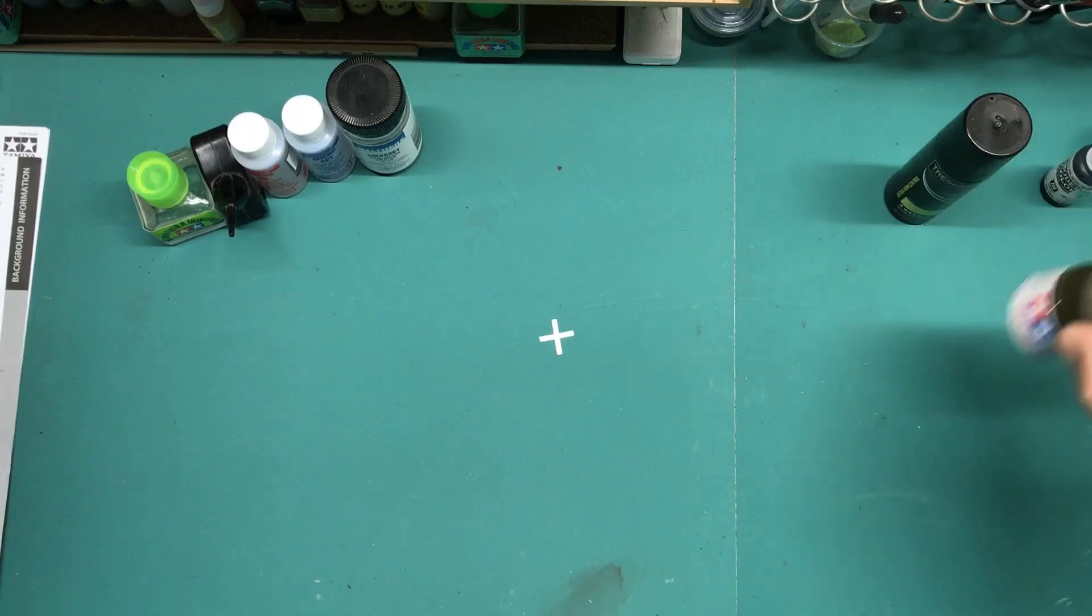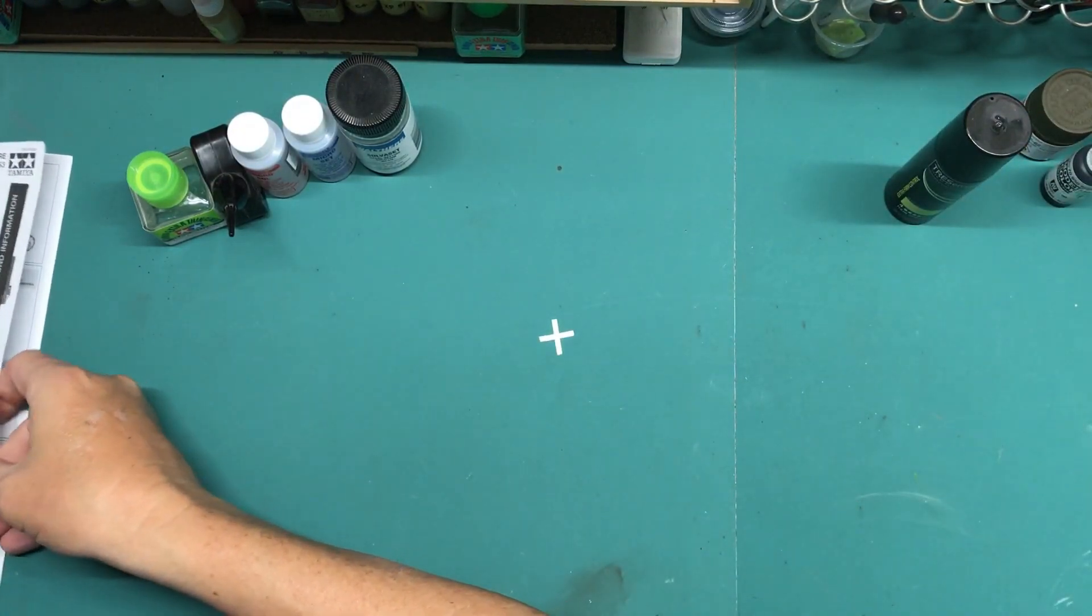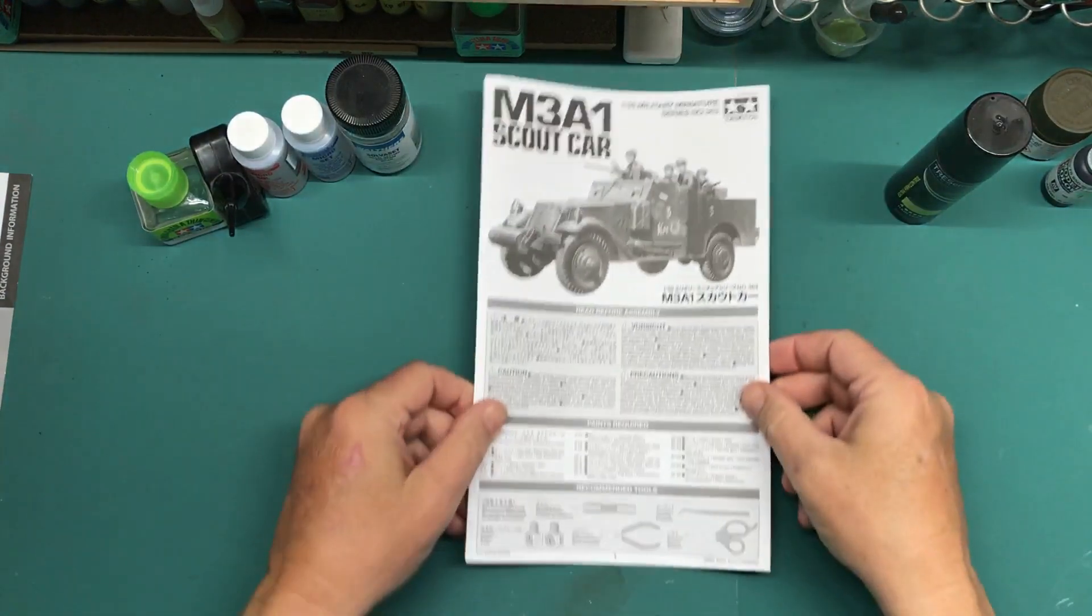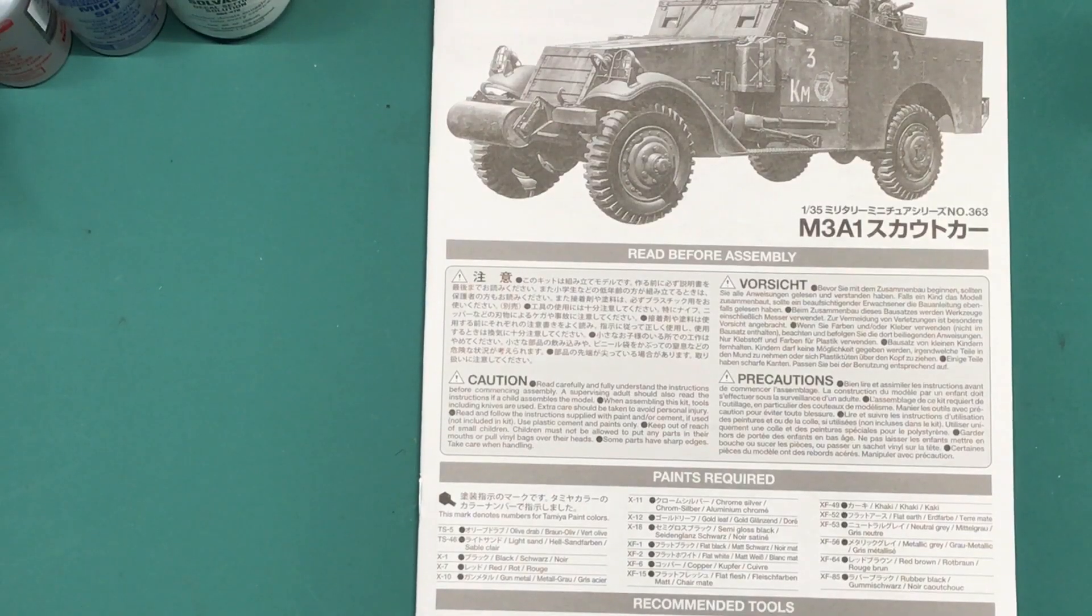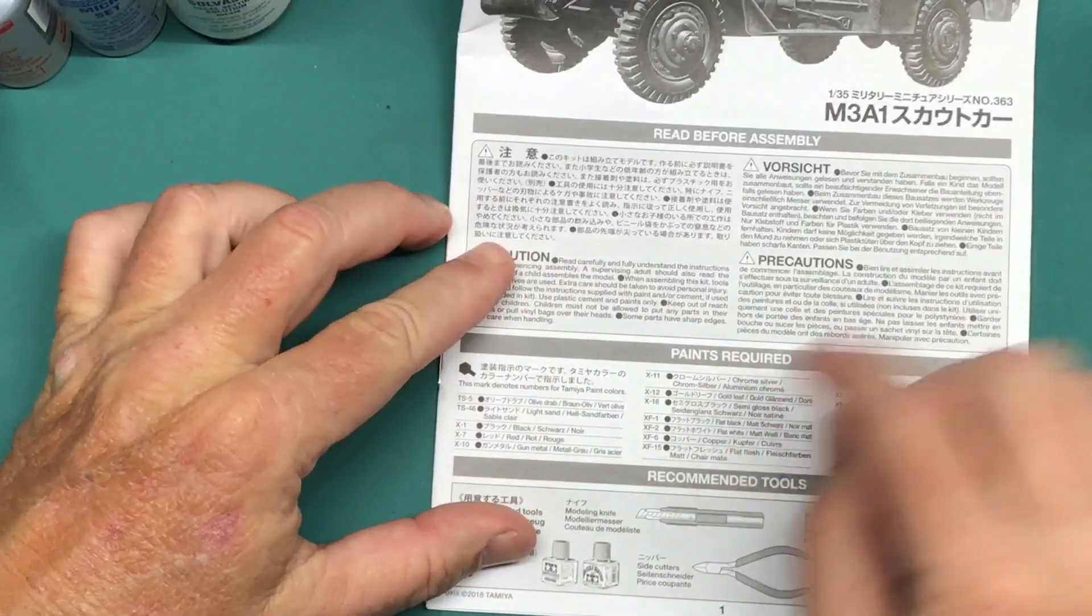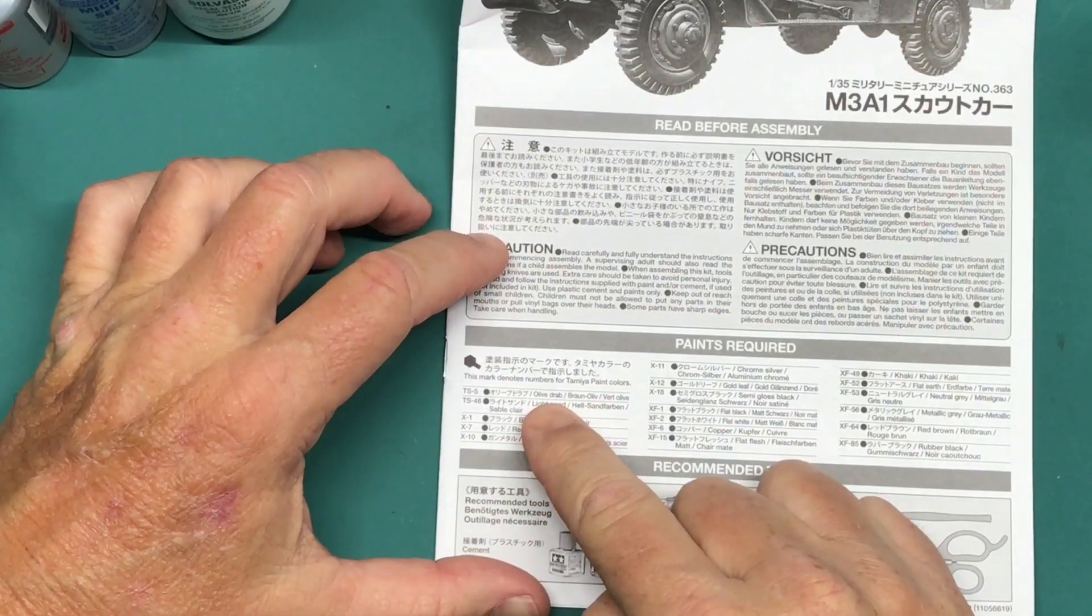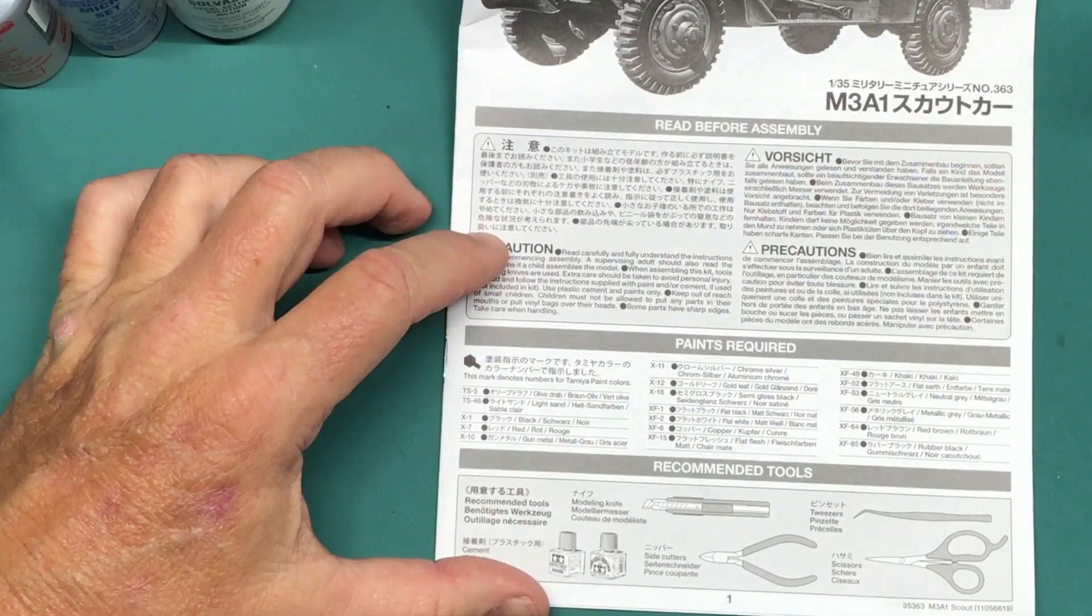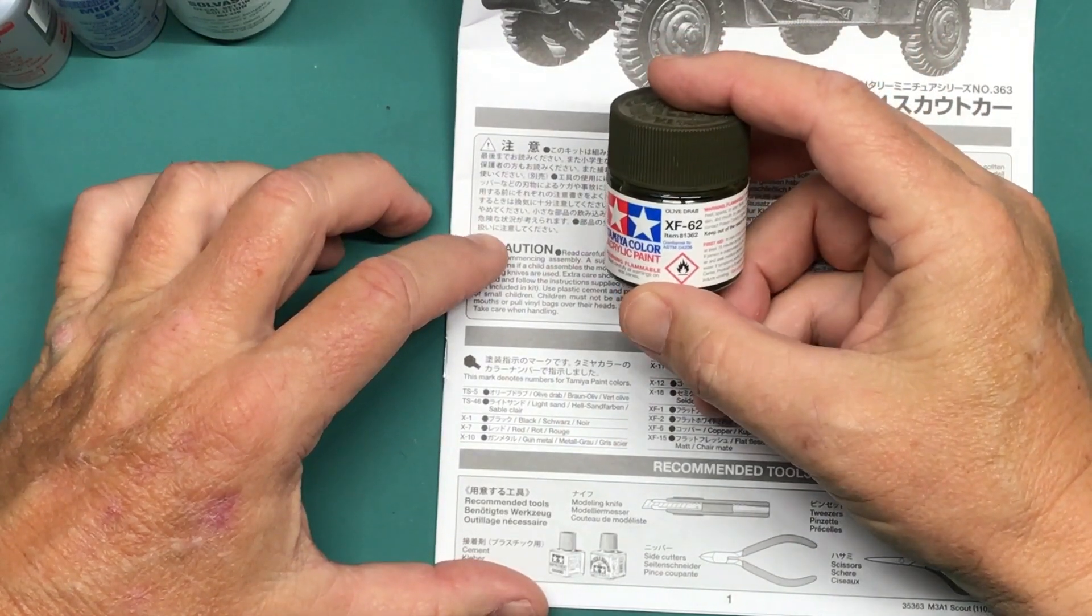For the overall color, well let's talk about the colors. Let's get the color instructions out here. So in the instructions, you may not be able to see it, but for the primary color they have listed TS5, which is olive drab, but it's in a spray can. Well I'm not using spray cans, I'm using an airbrush, so I'll be using XF62.